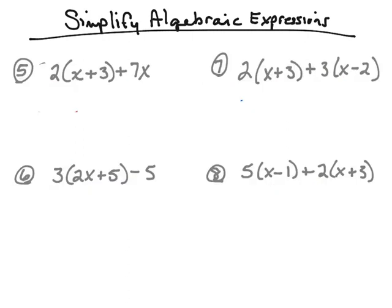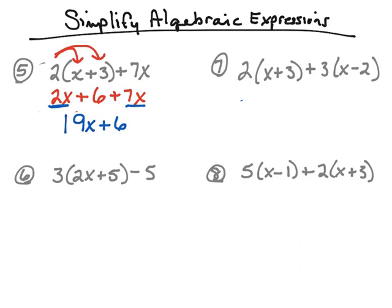Let's look at some more examples. Number five is another algebraic expression. First, we'll get rid of those parentheses using the distributive property. We take the two and multiply it with x — two times x is two x. Then two times three gives us six. The seven x is not inside the parentheses, so we just bring it down. Now we look for like terms: two x and seven x combine to give nine x. Since there's nothing to add with that six, we bring it down. This simplifies to nine x plus six.